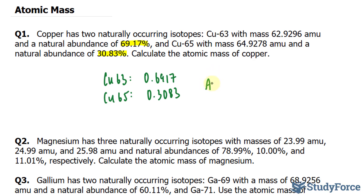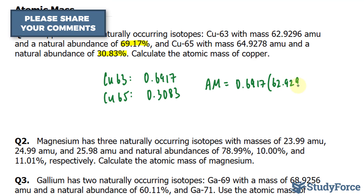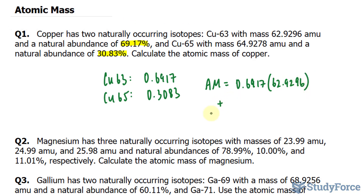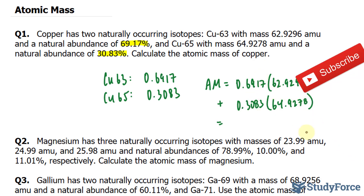So we have the atomic mass, which I'll represent as Am. We have 0.6917 multiplied by its mass 62.9296, plus 0.3083 multiplied by its mass 64.9278. Before we calculate this using our calculator, let's figure out what the significant figures will be. By multiplying each pair, we should end up with a number that has four significant figures.